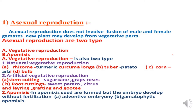Natural vegetative reproduction includes rhizomes, turmeric, tuber, potato, corn, herb, and bulb. Artificial vegetative reproduction involves two parts: stem cutting — sugarcane, basically called ganna, grapes, and rose — and root cutting — sweet potato and citrus.